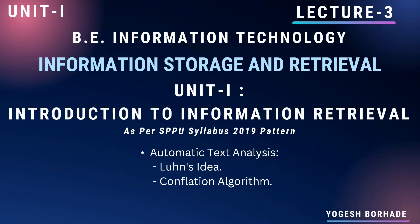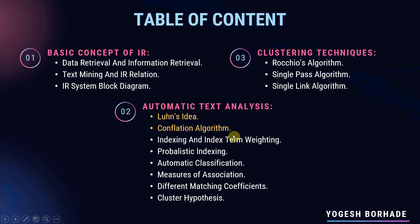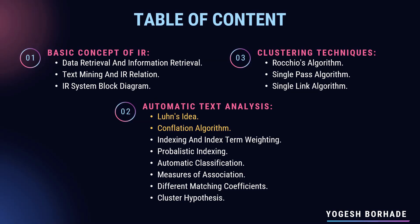Welcome to the YouTube channel. This is lecture 3 of ISR Unit 1, that is Introduction to Information Retrieval. In this video we'll start with the second main topic, that is automatic text analysis. We'll cover Loon's idea and the conflation algorithm. The basic concepts of IR are already covered in previous videos, with links given in the description and the info button.